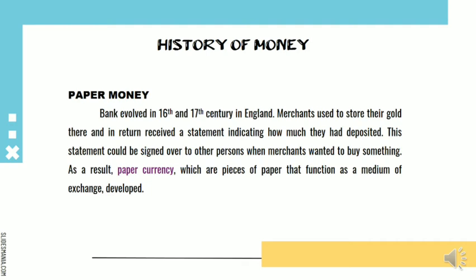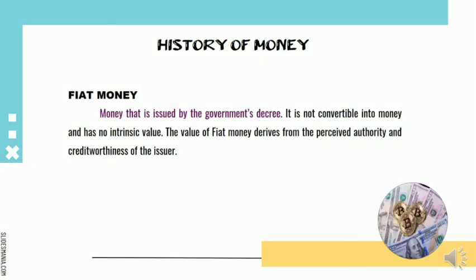However, this paper currency only served as a medium of exchange and was not yet accepted as legal tender until fiat money came into practice. Fiat money is similar to paper money, but it is issued by the government, which means it must be accepted as legal tender. It is not convertible into precious metal and has no intrinsic value; rather, the value of fiat money derives from the perceived authority and creditworthiness of the issuer.